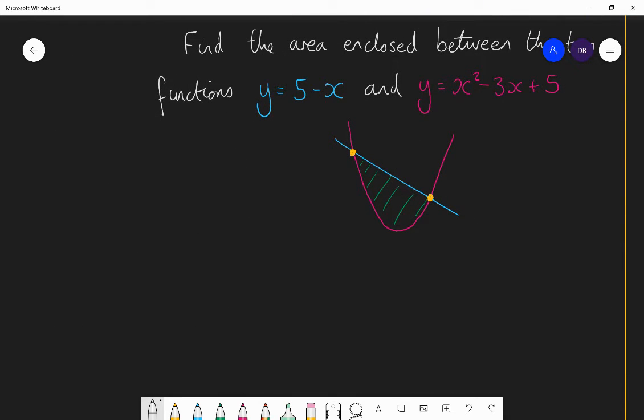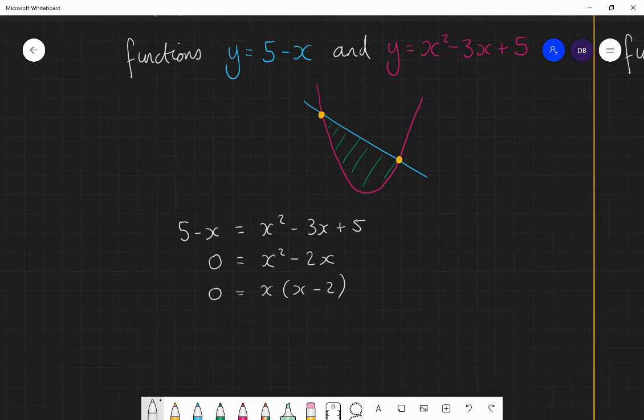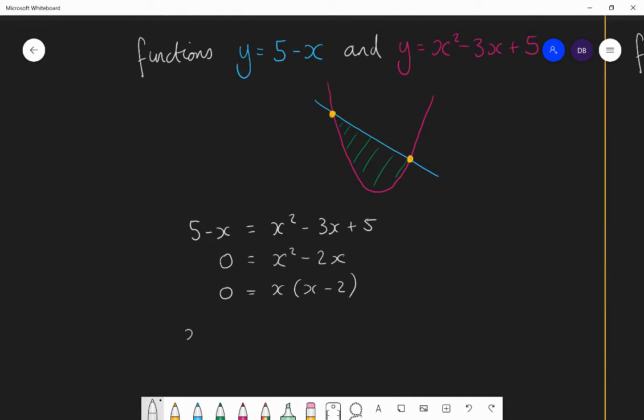So solving simultaneously is our next step. To solve where they meet, we know that that will be when 5 minus x is equal to x squared minus 3x plus 5. So this is just a quadratic, so if one side is 0, it makes it easier to solve. So take away 5 from both sides and add x to both sides and you get x squared minus 2x is equal to 0. Factorize, you get x lots of x minus 2. It's a simple one-bracket factorization. And therefore, the two solutions for this simultaneous equation are x is 0 or x is 2. So we know that the leftmost point has an x-coordinate of 0 and the rightmost point has an x-coordinate of 2.